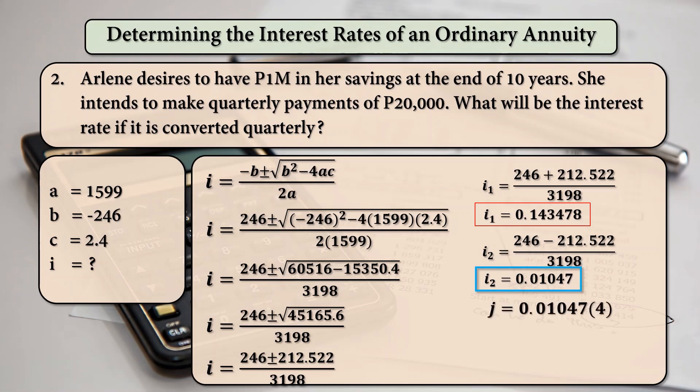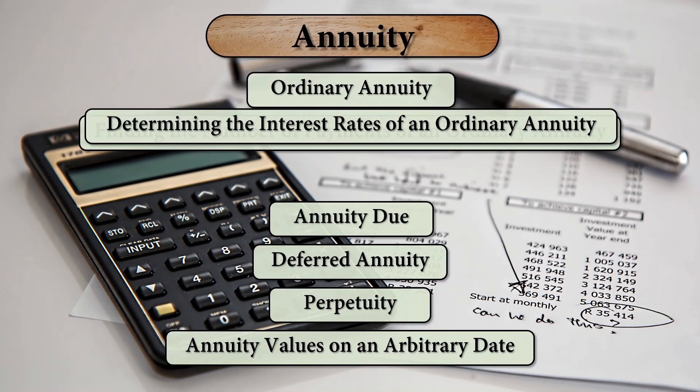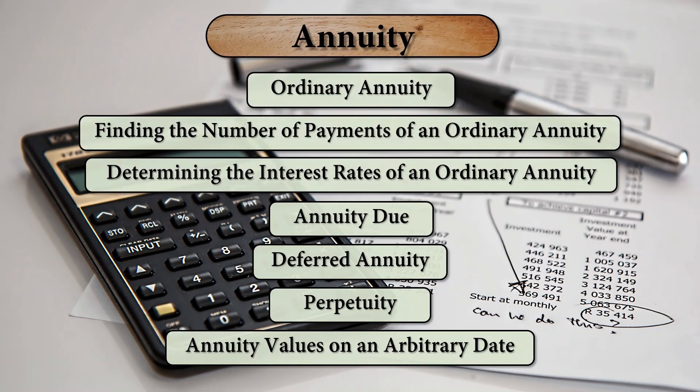Solving for j, that is 0.01047 times 4, which is equal to 0.0419 times 100 in percentage form. That will be equal to 4.19%. So, that is it for our third subtopic under the annuity. For your questions, comment down.